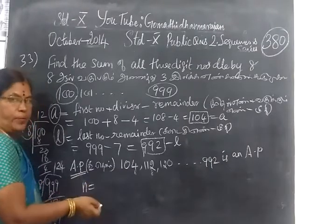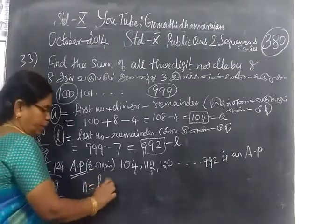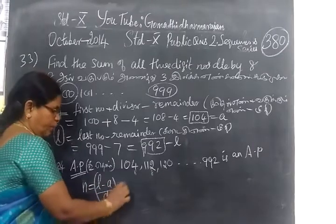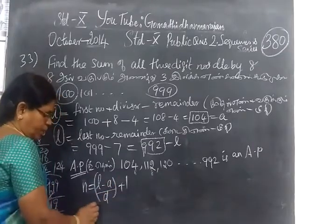You have to find the number of terms. The formula is L minus A by D plus 1.